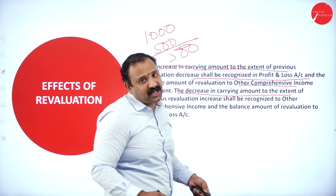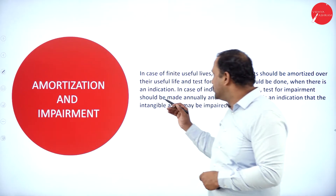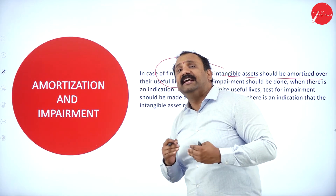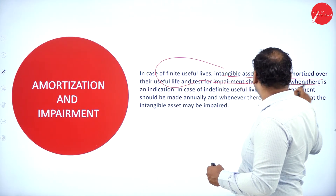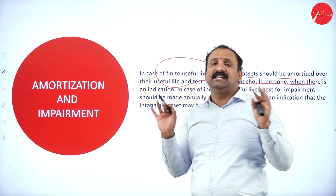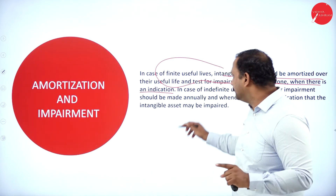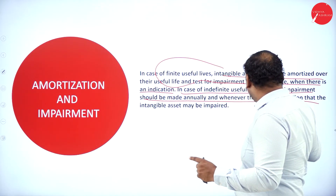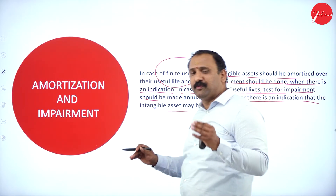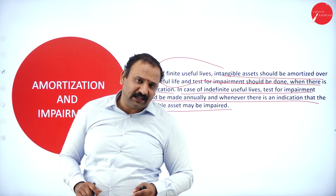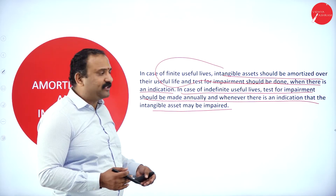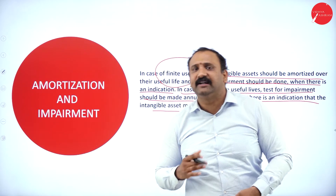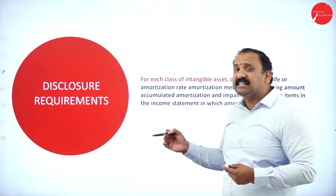For amortization and impairment: in the case of finite useful life, an intangible asset should be amortized over its useful life period, and a test for impairment should be done whenever there is an indication of impairment. In the case of indefinite useful lives, the test for impairment should be made annually and whenever there is an indication that the asset may be impaired. Whenever the asset is no longer going to generate future value or usefulness, it will be impaired and the value written off.